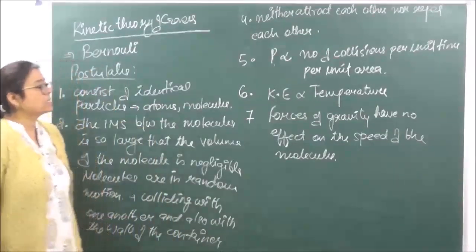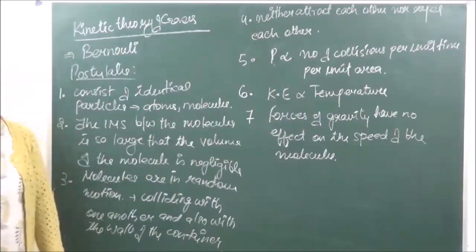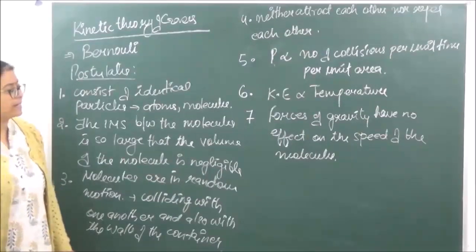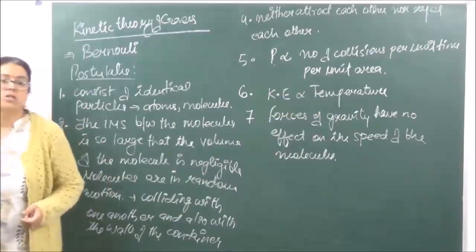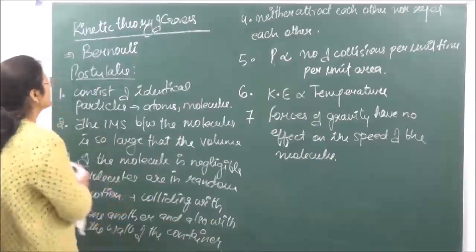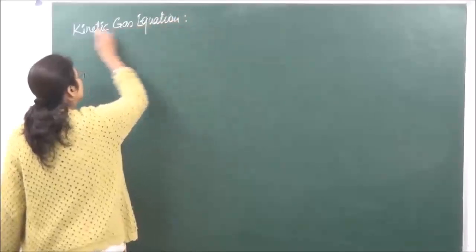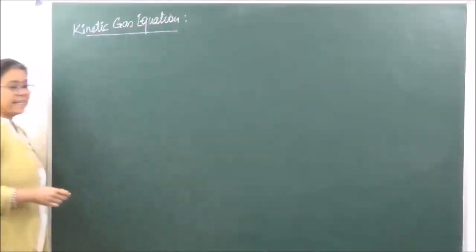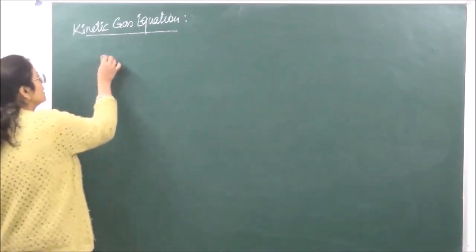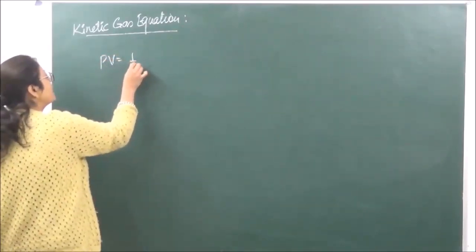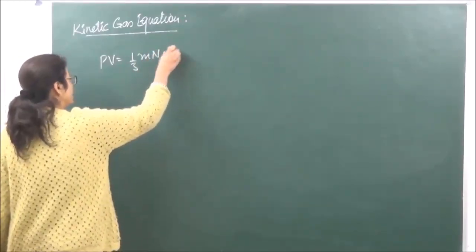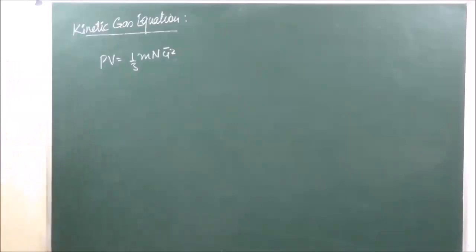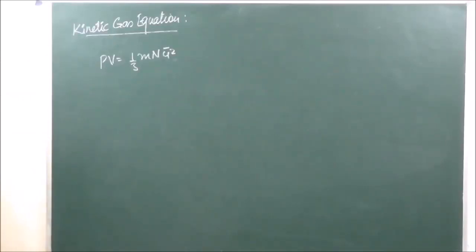Depending upon this, the kinetic energy of molecules of a gas was formulated, which is known as the kinetic gas equation. The kinetic gas equation is given as PV = 1/3 × M × N × u², where this is the kinetic gas equation.